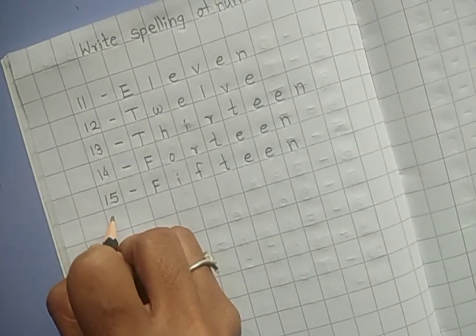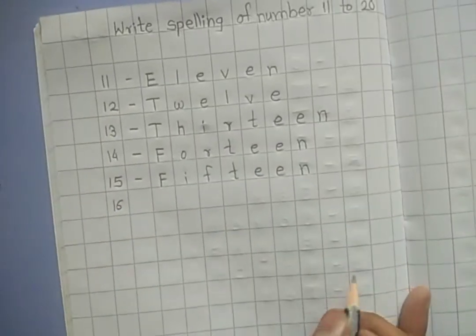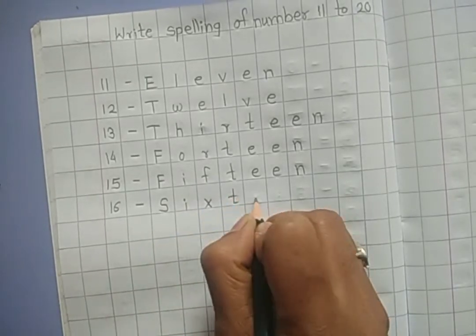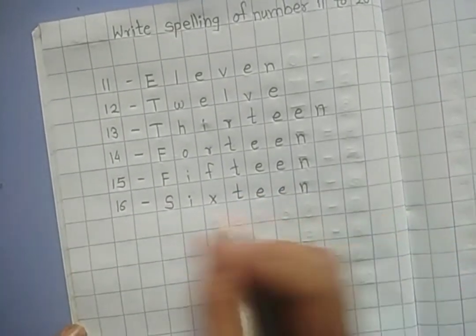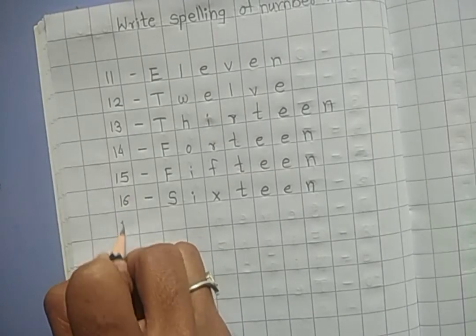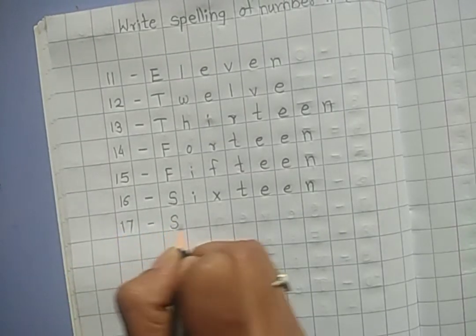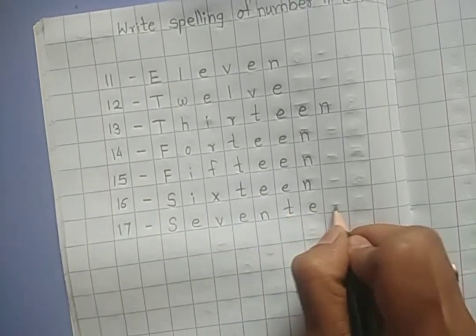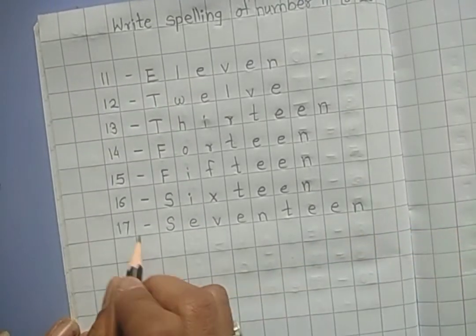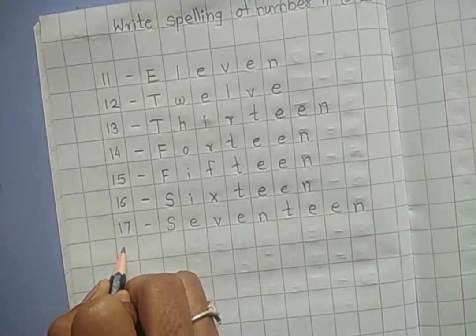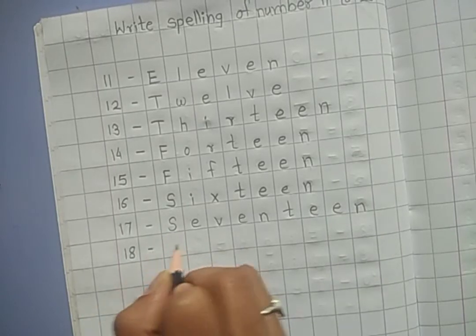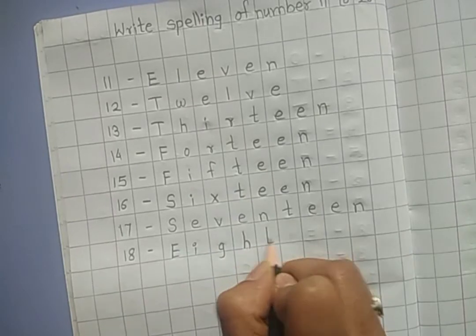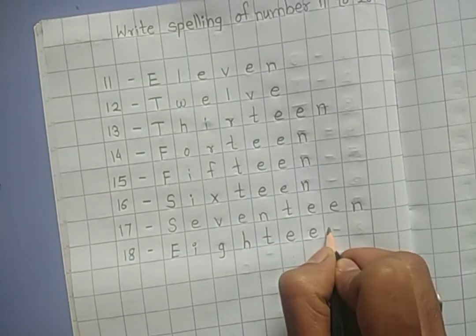Next number is 16, S-I-X-T-E-E-N, sixteen. 17, S-E-V-E-N-T-E-E-N, seventeen. Next is 18, E-I-G-H-T-E-E-N, eighteen.